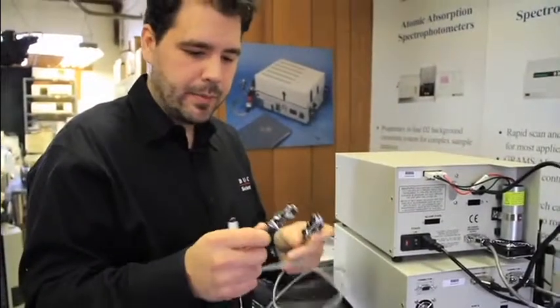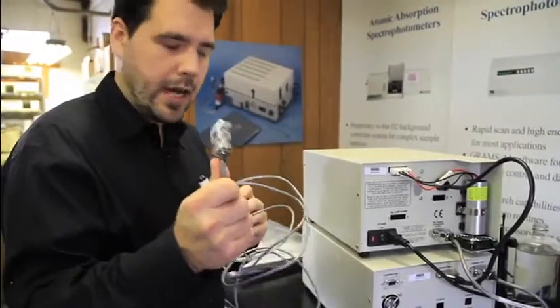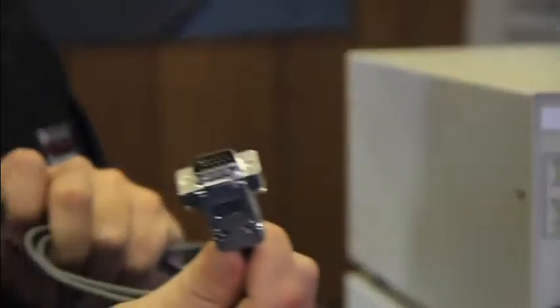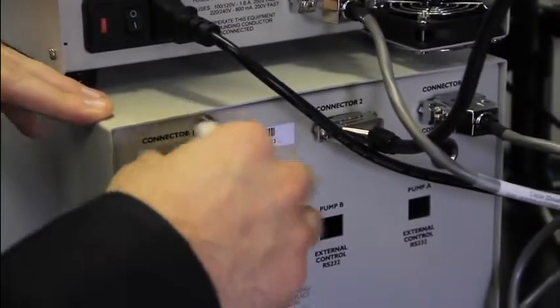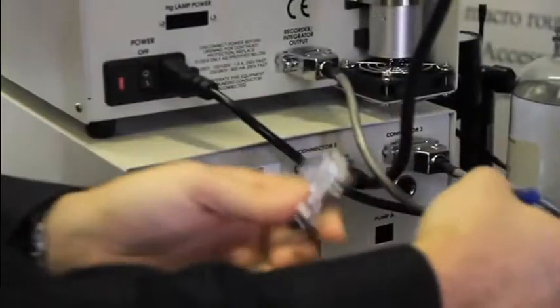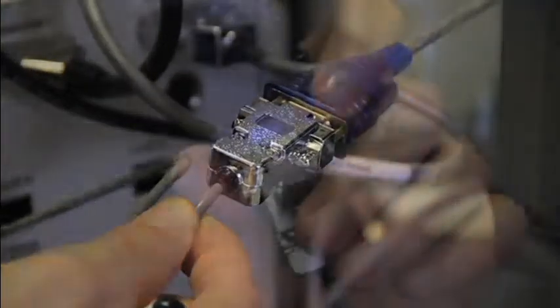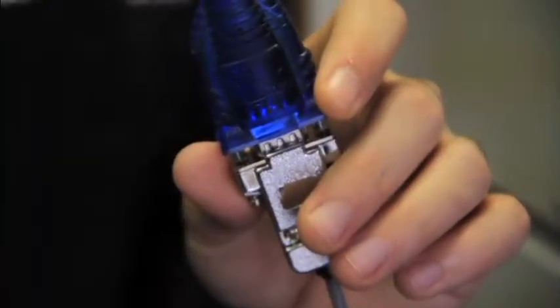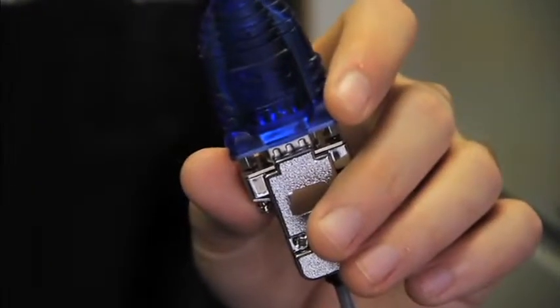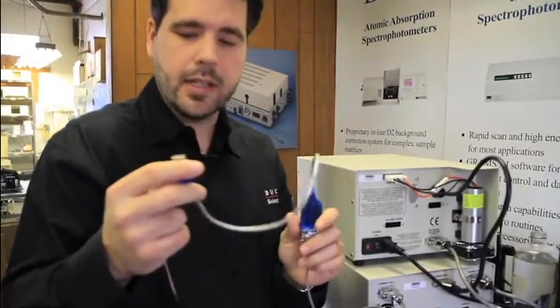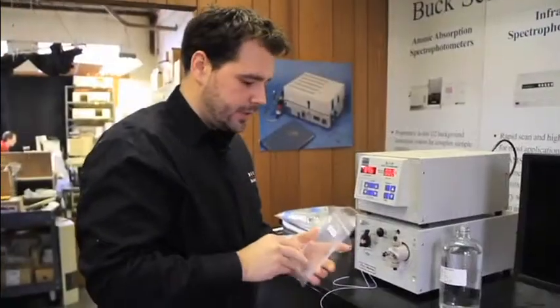The final connection that needs to be made is the detector output to the computer. There's a male end with 15 pins and a female end with 9 pins. The male end goes on connector 1 on the pump chassis, and the female end goes to a serial cable coming from your computer. If your computer does not have a serial cable, we also offer USB adapters, or you can purchase them locally at many electronic stores.